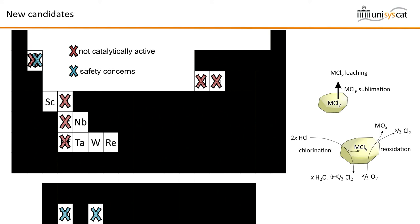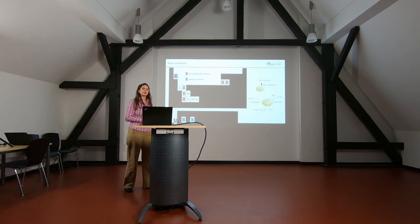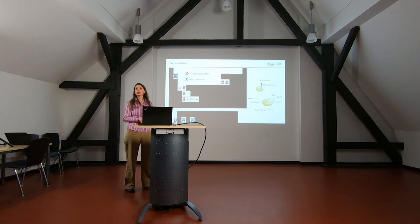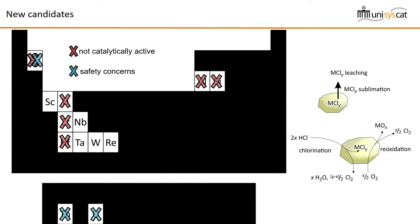Thorium and uranium are radioactive, so using them in a large-scale process would be a major safety concern, and we are also going to rule out these two candidates. So in the end, we end up with just five candidates. Among these, I'm going to rule out scandium and rhenium as well because they are extremely expensive and quite rare and not suitable for large-scale processes. So in the end, we end up with just three new candidates, which looks a little bit disappointing on first glance because we made all of this effort and now we find out there are only three new candidates.